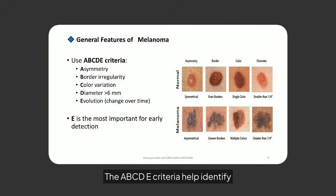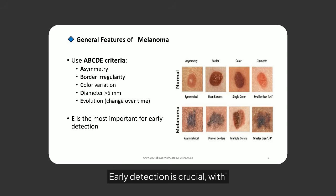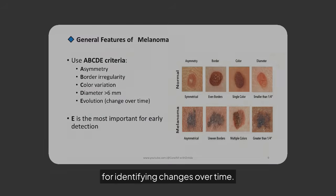The ABCDE criteria help identify melanoma: asymmetry, border irregularity, color variation, diameter over 6 mm, and evolution. Early detection is crucial, with E being the most important for identifying changes over time.